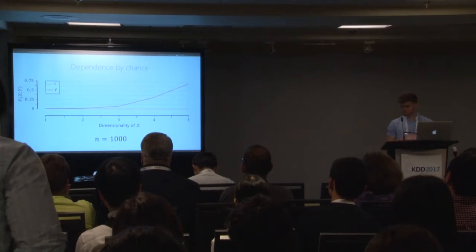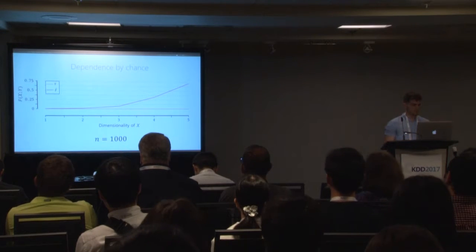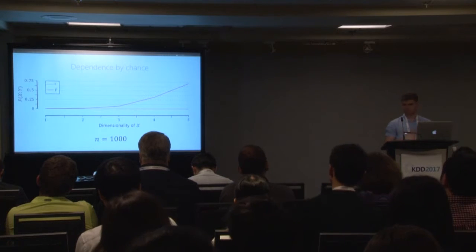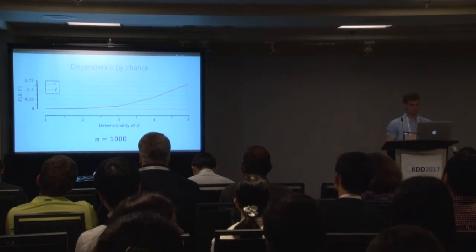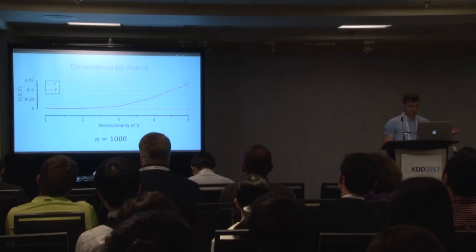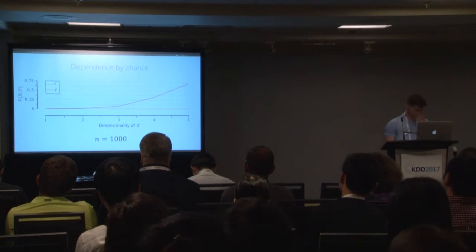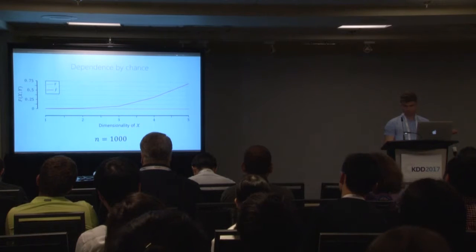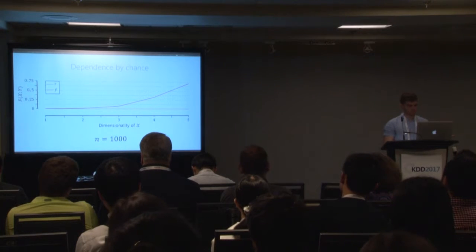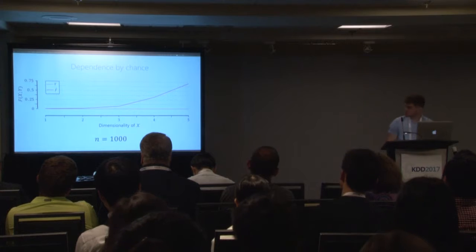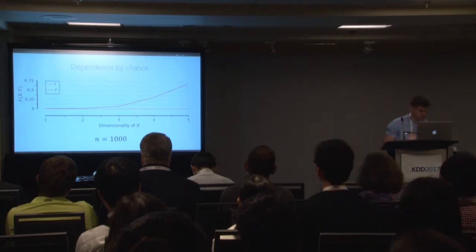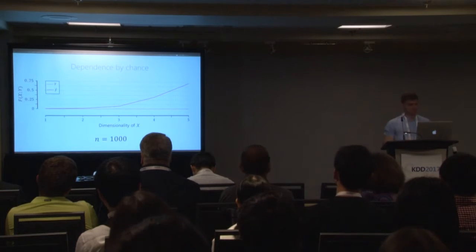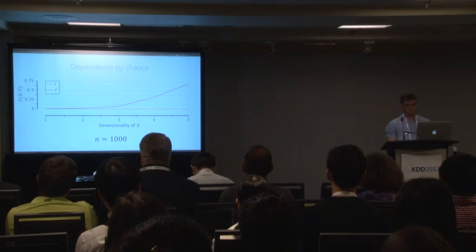Here is a small demonstration. We have variables X and Y and generate 1,000 samples independently. For X we consider five different dimensionalities: 1, 2, 3, 4, and 5. The score should always be zero since they were generated independently. But as we see, the naive estimator F-hat — the red line — starts showing dependence basically after dimensionality 3.